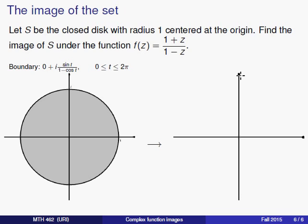What that means is that the imaginary axis itself is the boundary of the image of this shape. This circle with radius 1 will get mapped to the imaginary axis.